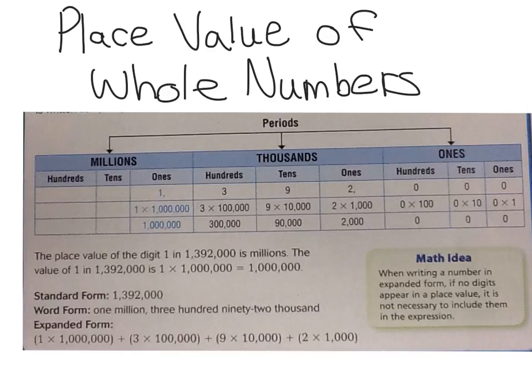Standard form is the way that numbers are typically written, the way you see them. They have the place value already in there. So it's just whatever you normally would write or see on a calculator or on a piece of paper. For example, looking right here at standard form, it's 1,392,000.